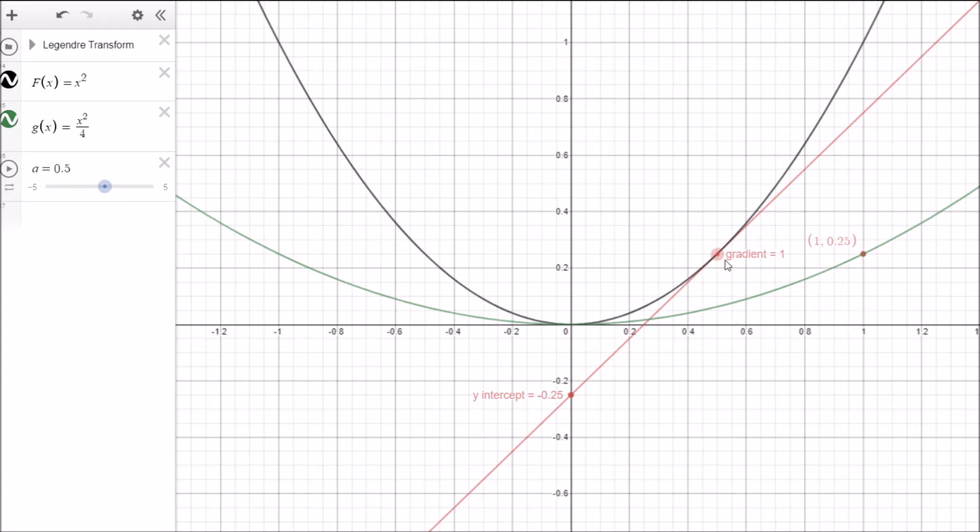So it means that in order to generate this new curve, which is the Legendre transform of the old curve, all we have to do, if we take another example of a point, say here, all we have to do is find the gradient of the point. The gradient becomes the x value of our new Legendre transformed curve. And the y value is the height or the y-intercept of this tangent line.